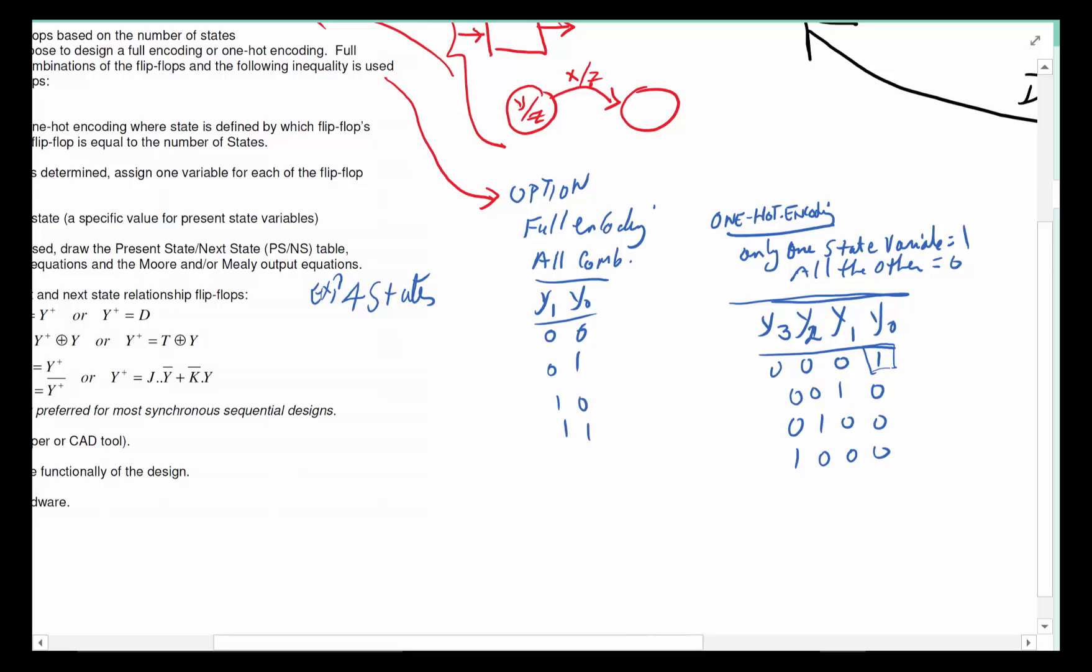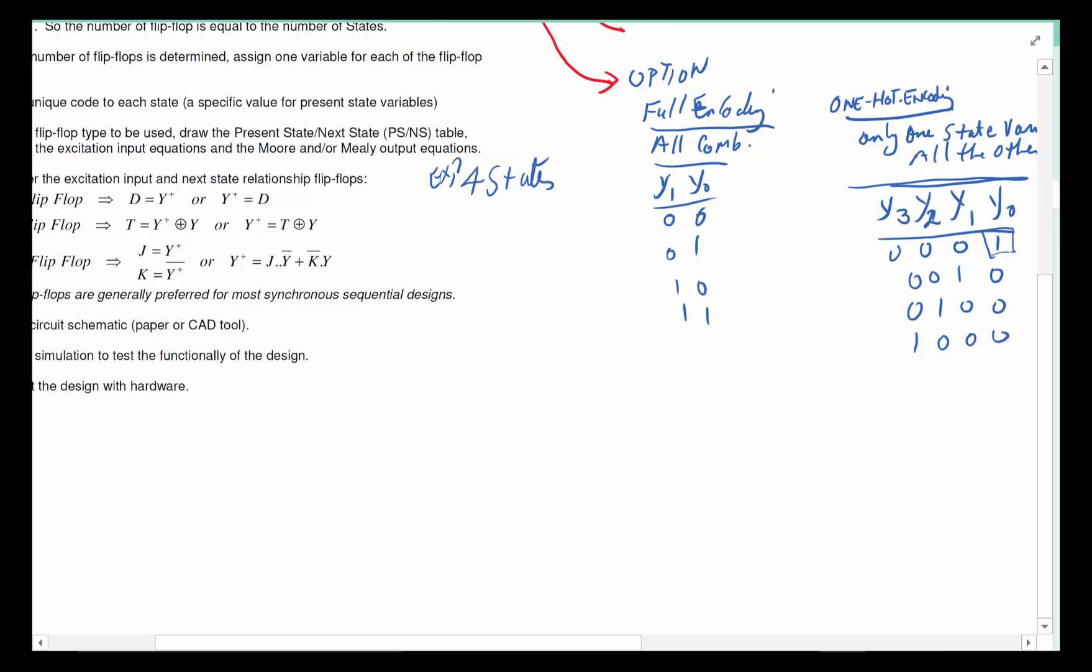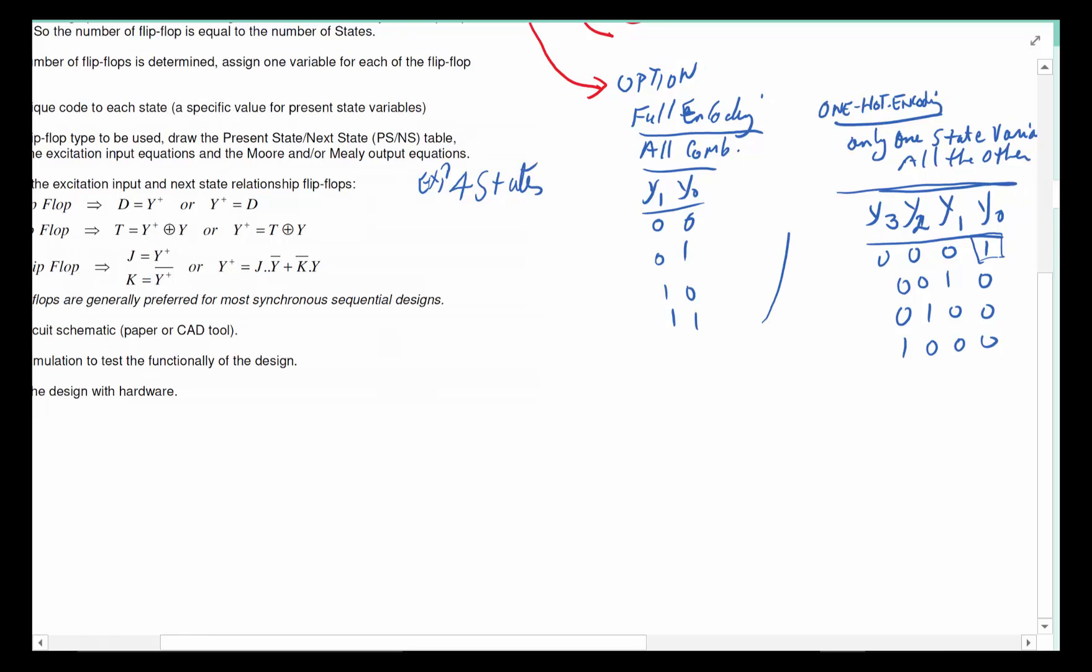That's the reason one-hot encoding exists. We're going to have an example of one-hot encoding, but full encoding is our default scheme as we go through learning exercises.